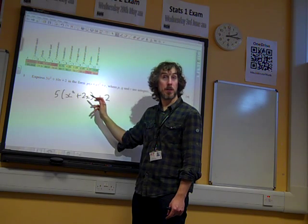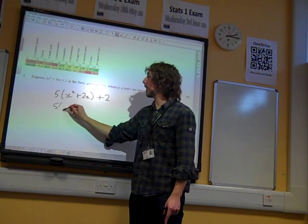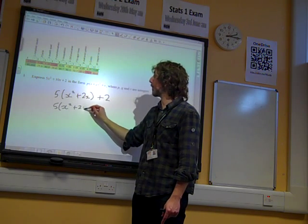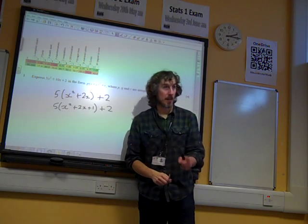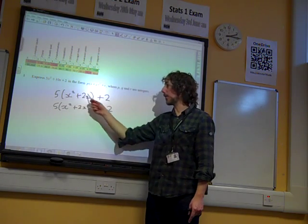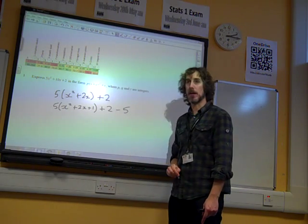A half of 2 is 1, and when you square it you still get 1. So that's 5 lots of x squared plus 2x plus 1. It already had a plus 2, but look, we have now added in 5 lots of 1, which is 5.